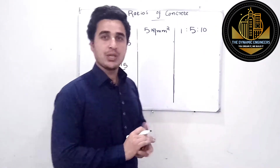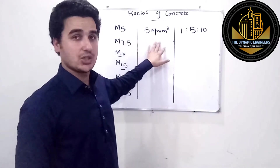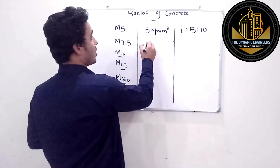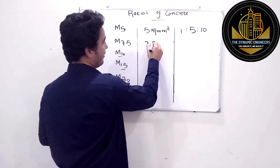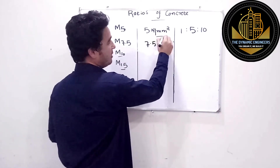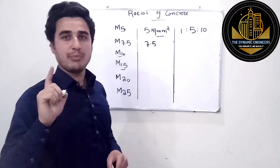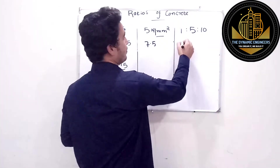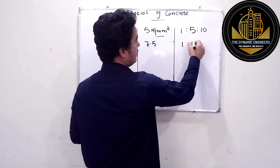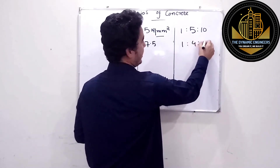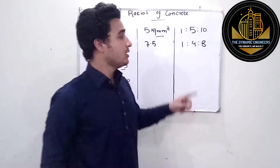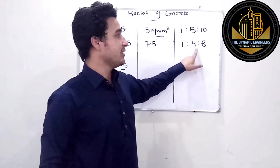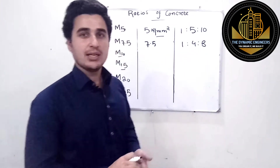The second one is M7.5, having a concrete strength of 7.5 Newton per millimeter square, or 7.5 megapascal. The ratio for this is 1:4:8, which means 1 unit of cement, 4 units of sand, and 8 units of aggregates.